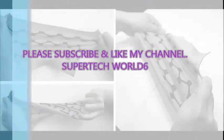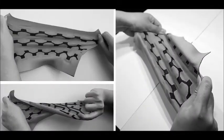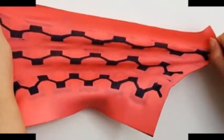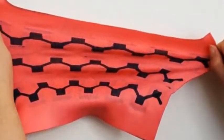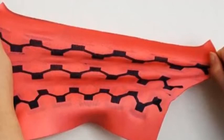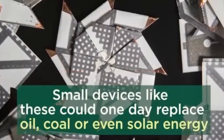Scientists create stretchable battery made entirely out of fabric. New microbial fuel cell could be integrated into wearable electronics. Scientists have developed an entirely textile-based, bacteria-powered biobattery that could one day be integrated into wearable electronics.